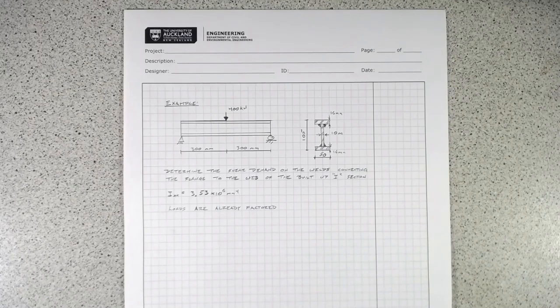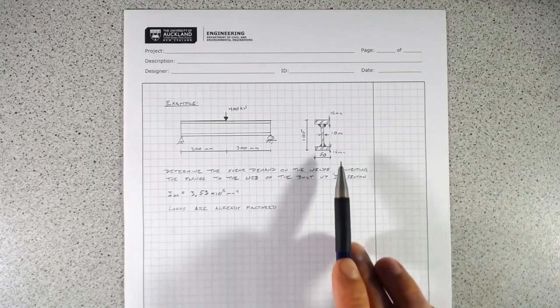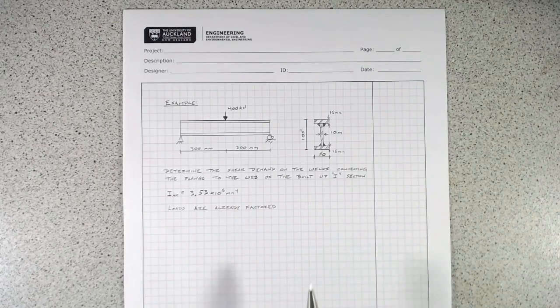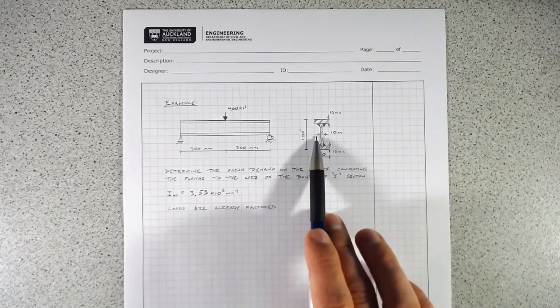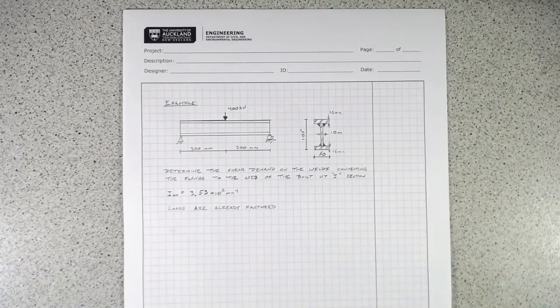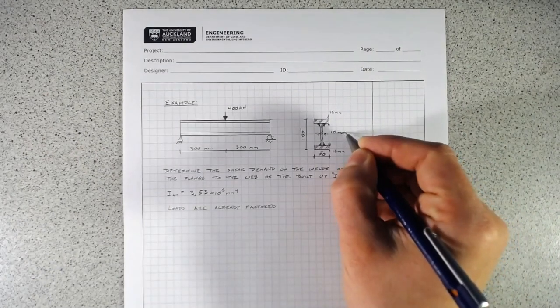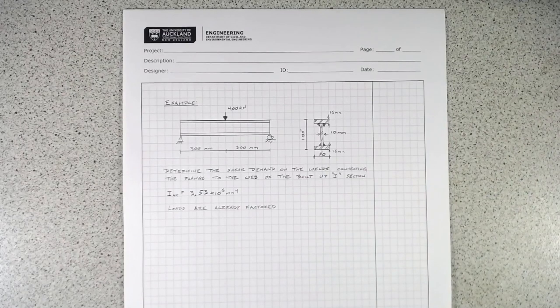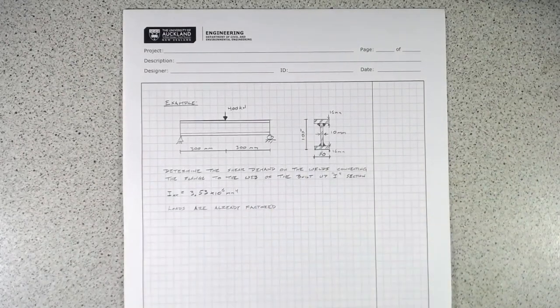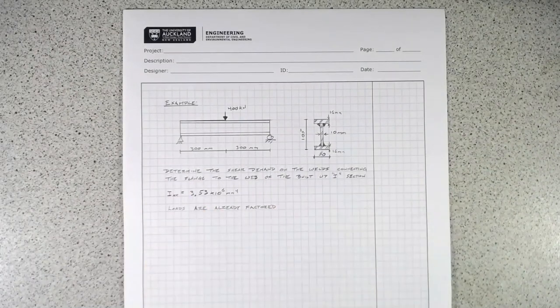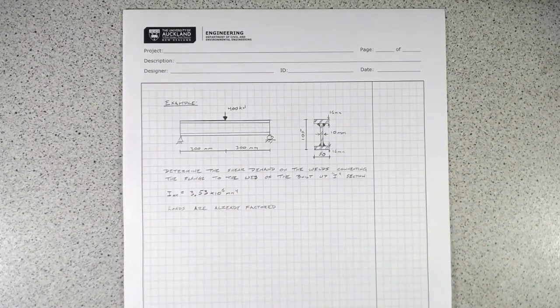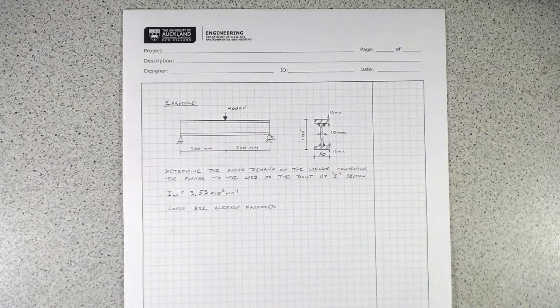The section is made of 16 millimeter thick plates as the flanges, welded to a 10 millimeter thick web. The whole thing is 105 millimeters tall and spans 600 millimeters with a rather large load on top of it, approximately 40 tons there.